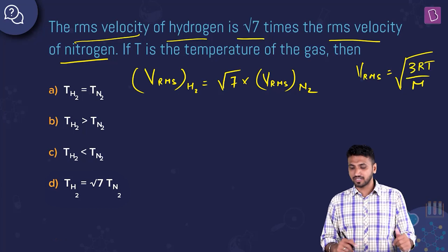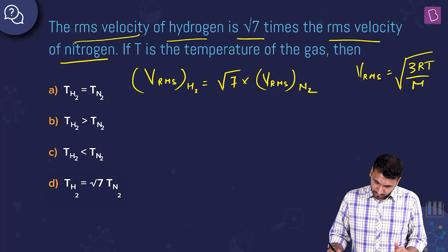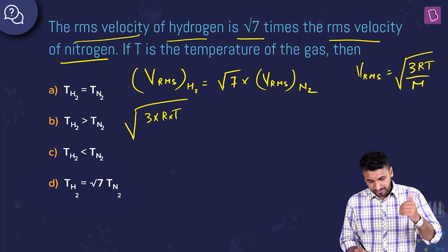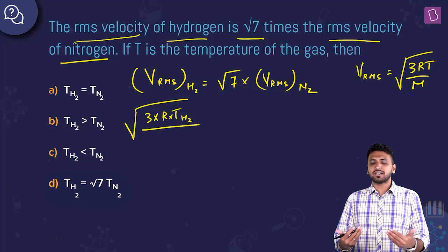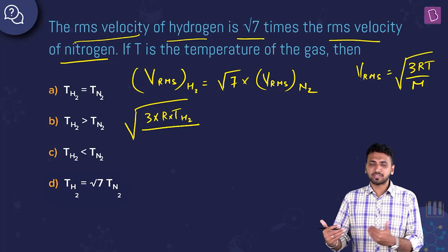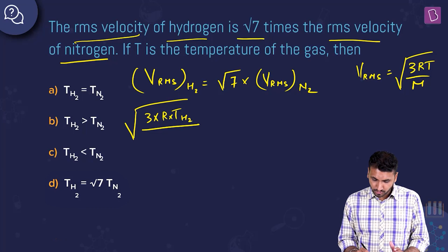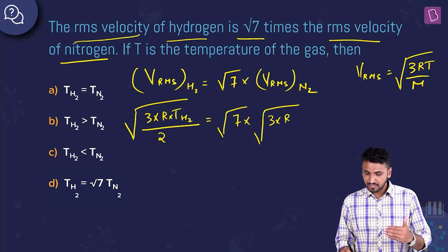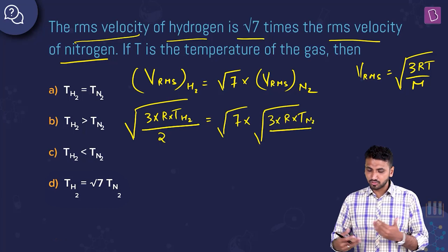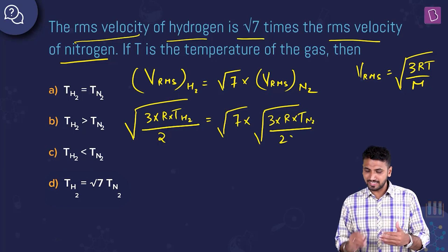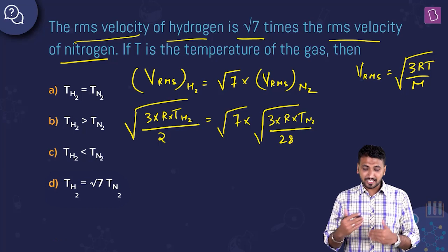The formula for V_RMS is √(3RT/M). For hydrogen: √(3R·T_H₂/2) = √7 × √(3R·T_N₂/28). Squaring both sides: 3R·T_H₂/2 = 7 × 3R·T_N₂/28. Cancelling 3R from both sides: T_H₂/2 = 7·T_N₂/28 = T_N₂/4. Therefore T_H₂ = T_N₂/2.